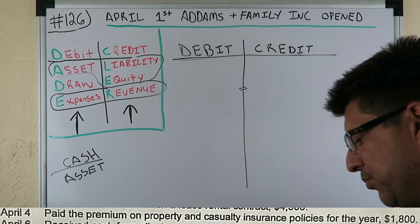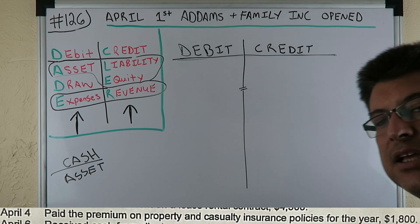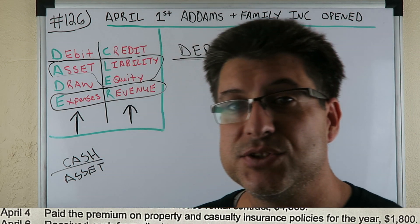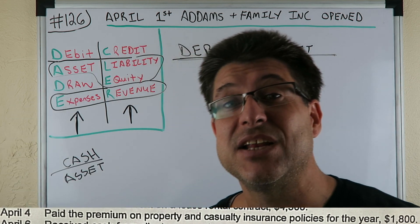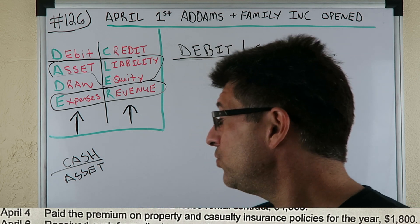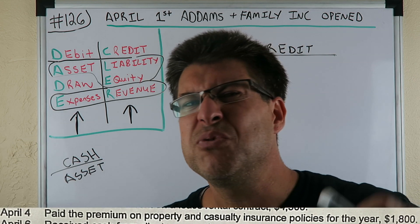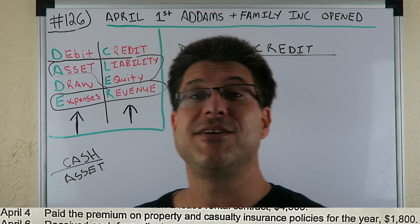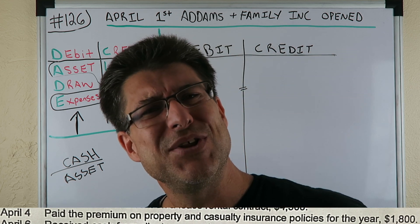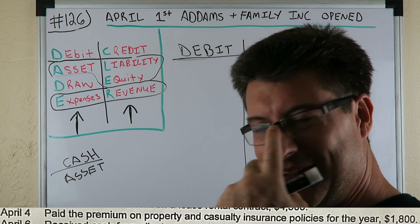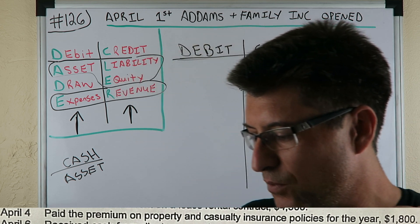This transaction is: paid the premium on property and casualty insurance policies for the year. Let's ease into it — we're going to do cash right away, because you've been practicing journal entries with cash. You have DCAELUR, and you've even written cash as an asset. So you paid the premium on property and casualty insurance policies for year — $1,800 paid.